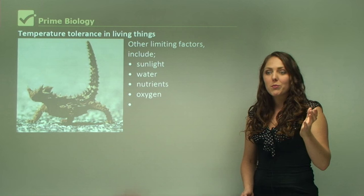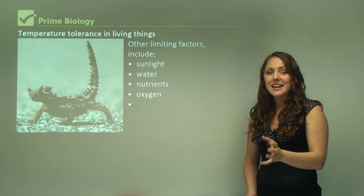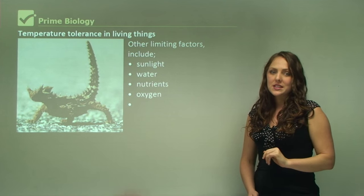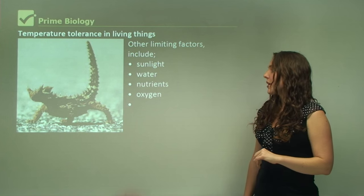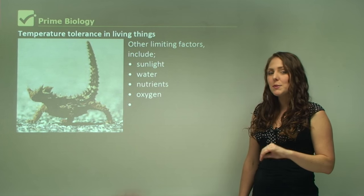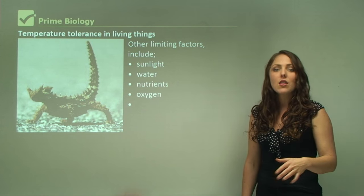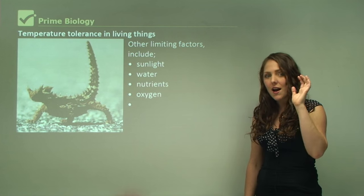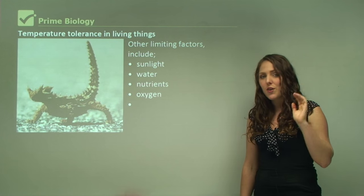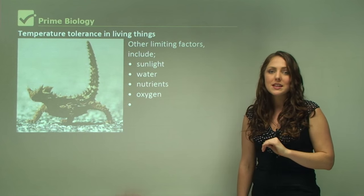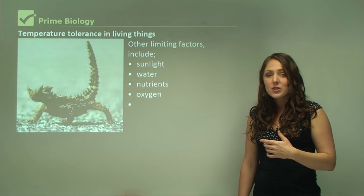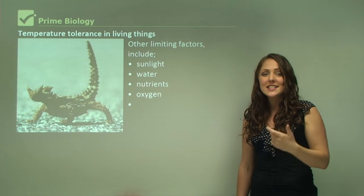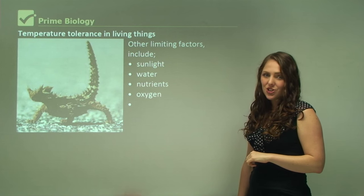Oxygen is another limiting factor — a lot of organisms need oxygen to survive, not all, but most. So if oxygen is limiting, that's another environment which is not good for organisms to survive in. At higher altitudes you'll find there are fewer organisms living up there because the oxygen content decreases as the air is thinner at higher altitudes.